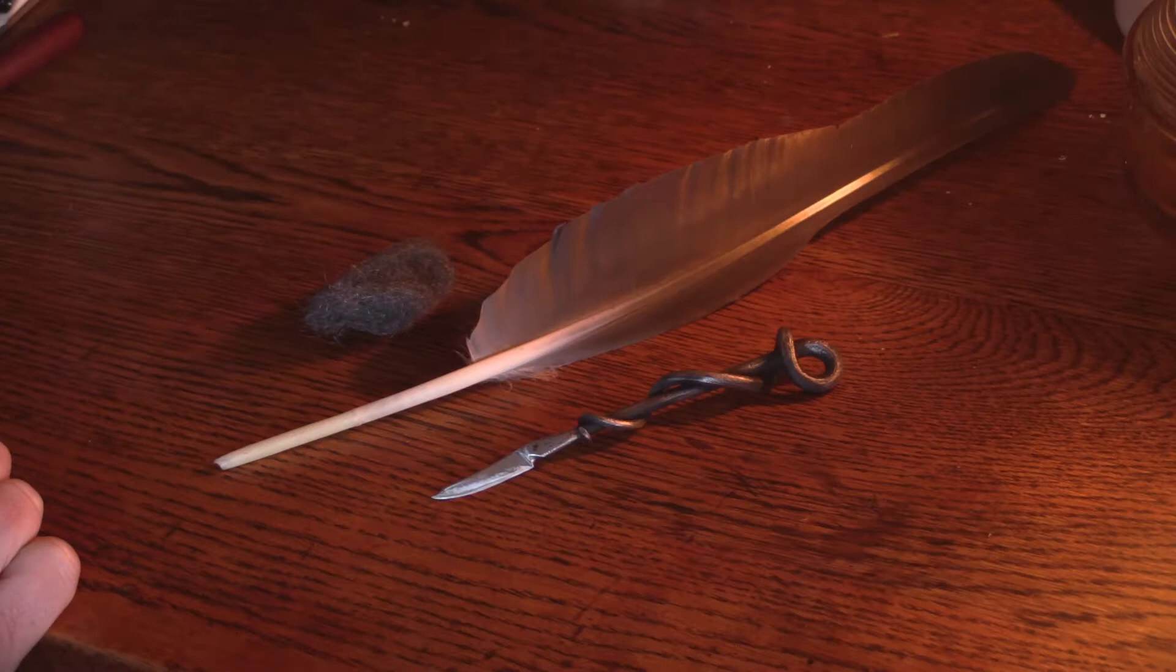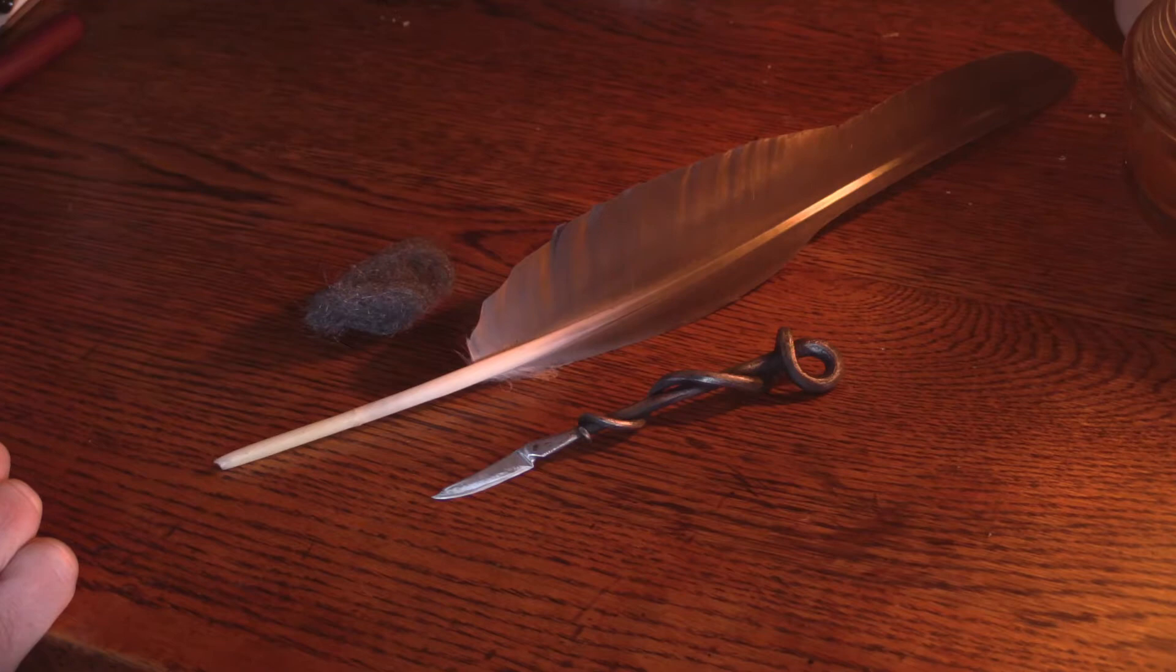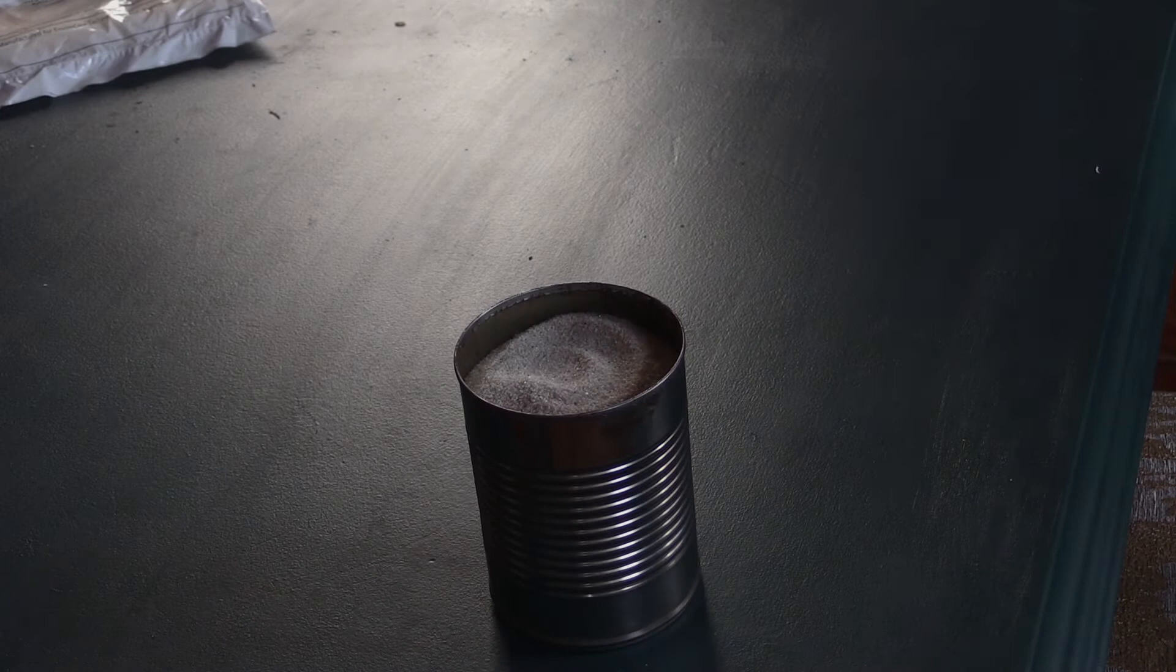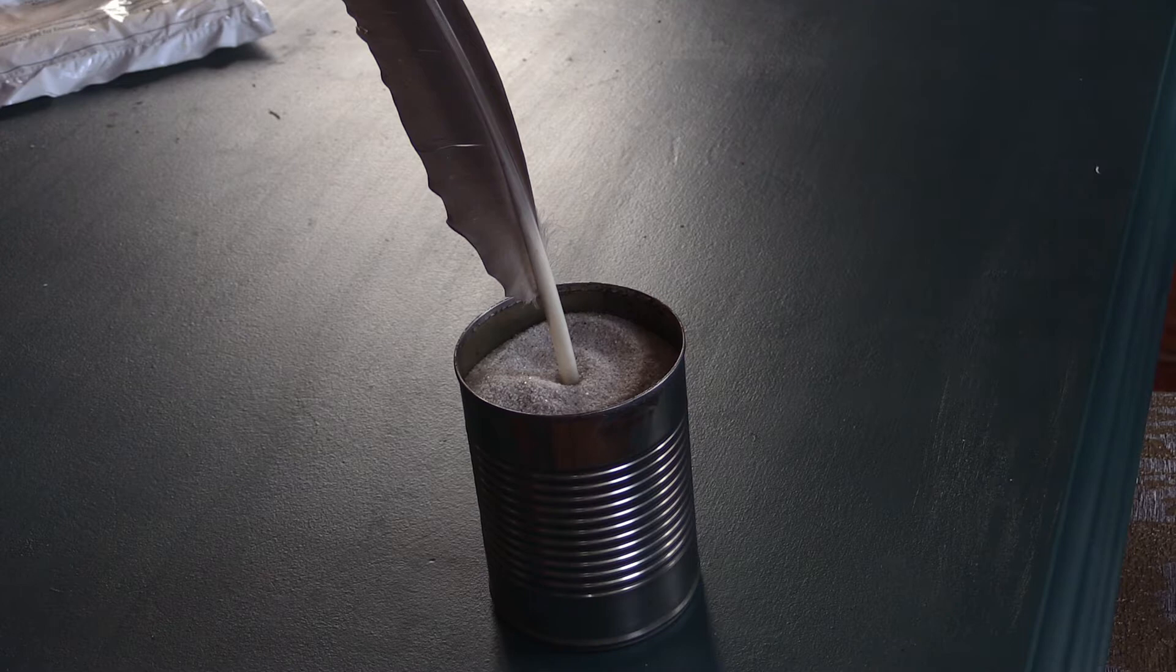To cut a good quill, you'll need a good feather, a small very sharp knife, and some ultra-fine steel wool. If the feather is fresh, you'll need to cure it before it will be stiff enough to cut or write well. You can leave it on the windowsill for a week or two, or you can stick it in hot sand for 10 minutes.